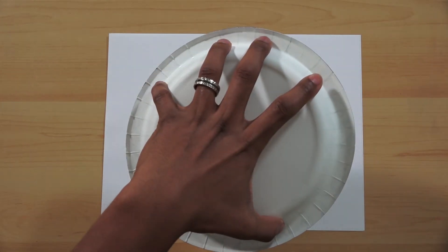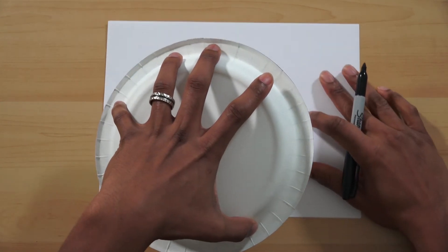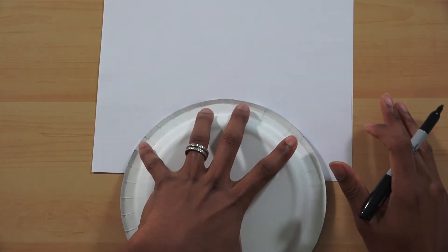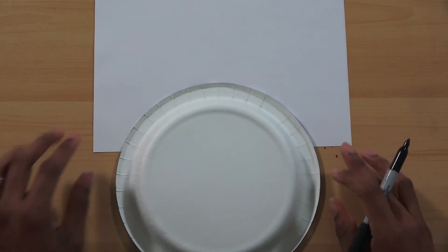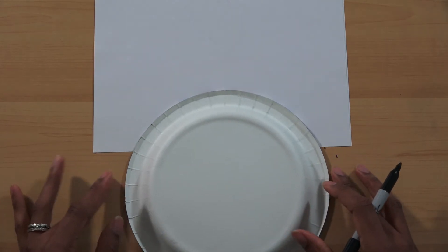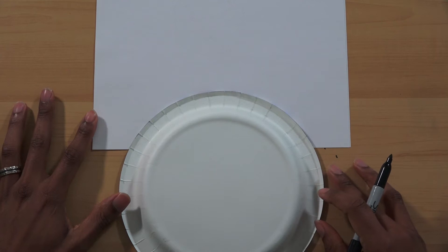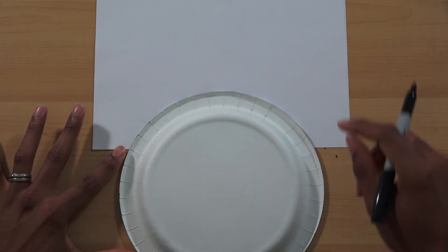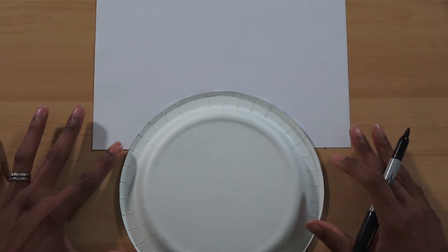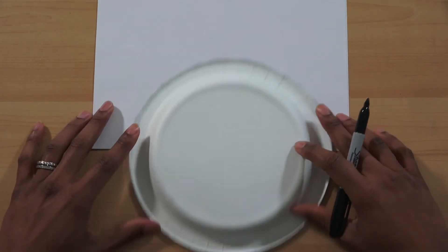You'll also need to find a round flat object. We're going to trace this round flat object. At the bottom of your paper, place that round flat object at the bottom. Try to center it as best as you can and bring it all the way down. We don't need the whole thing on there. We just need just a little bit.